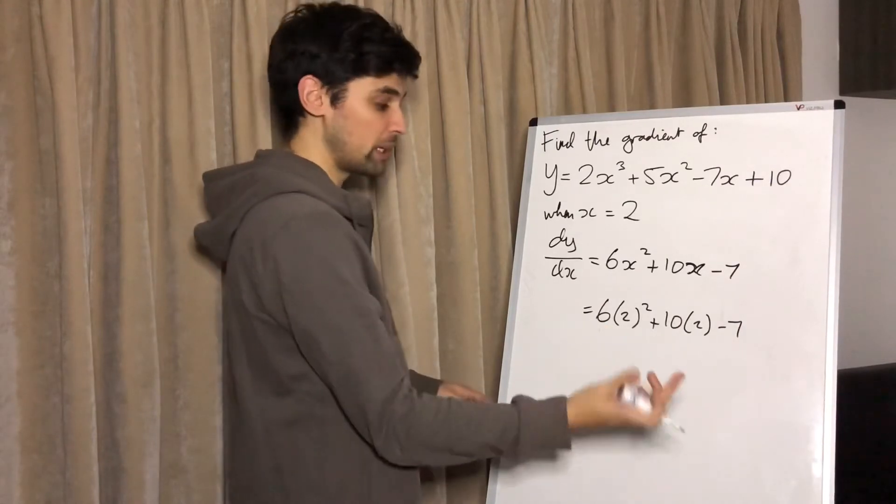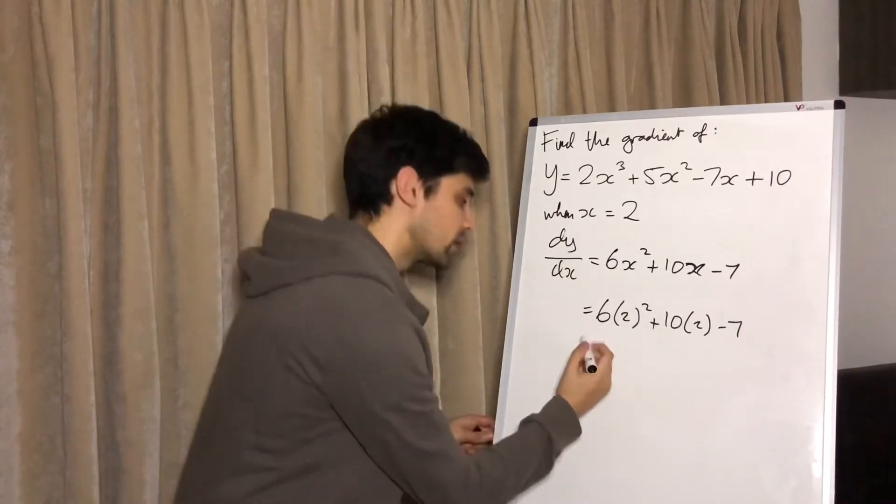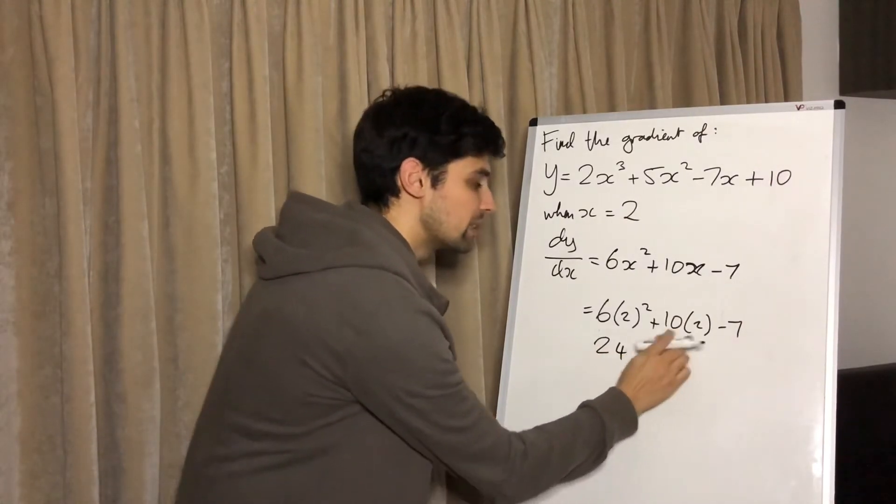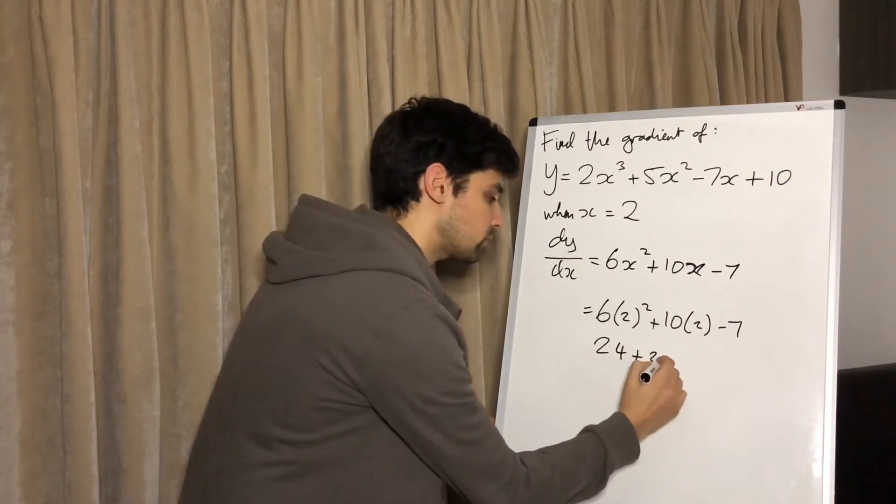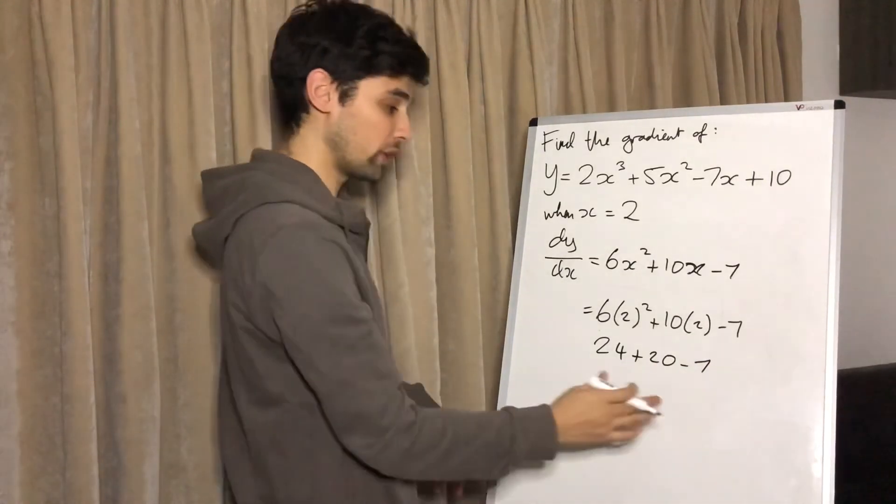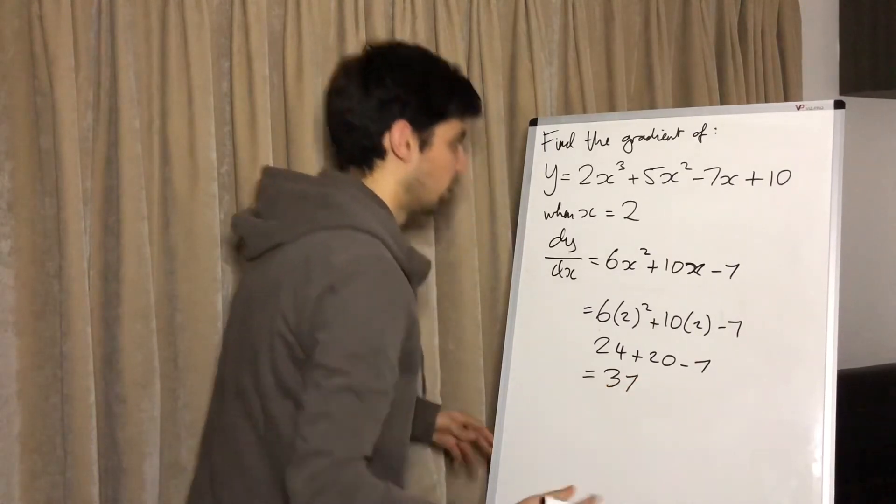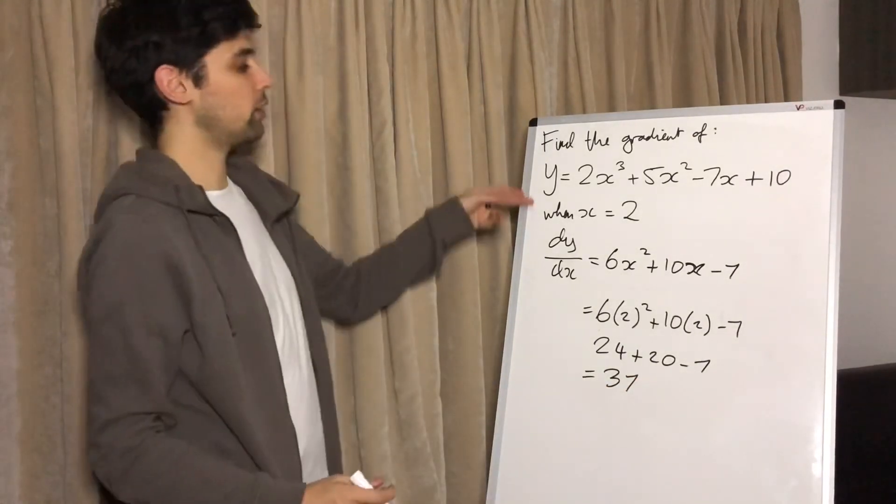So using BIDMAS, we'll see indices before the multiplication, so 2 squared is 4, 4 times 6 is 24, 10 times 2 is 20, and minus 7. 24 plus 20 is 44, minus 7 is 37. That's it, that's the gradient of this curve when x equals 2.